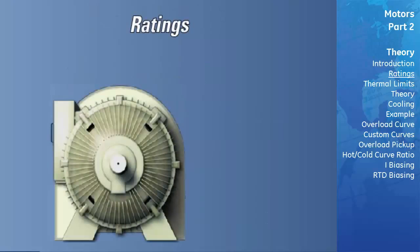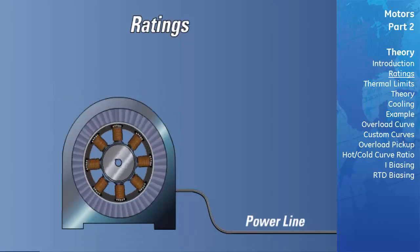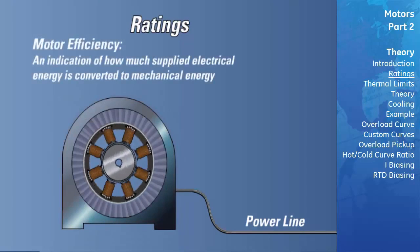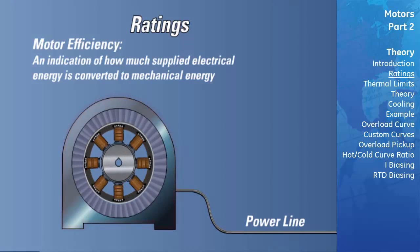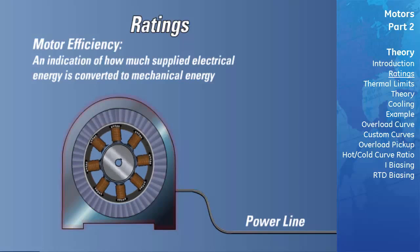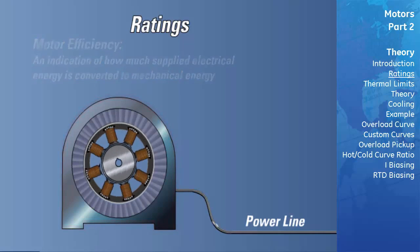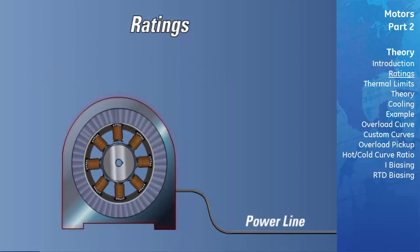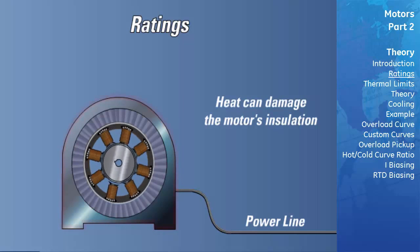One of the most common motor terms is motor efficiency. Motor efficiency is an indication of how much of the electrical energy supplied to the motor is converted into output shaft mechanical energy, and is expressed as a percentage. The rest of the energy is lost primarily in the form of heat, which can be damaging to the motor's insulation.